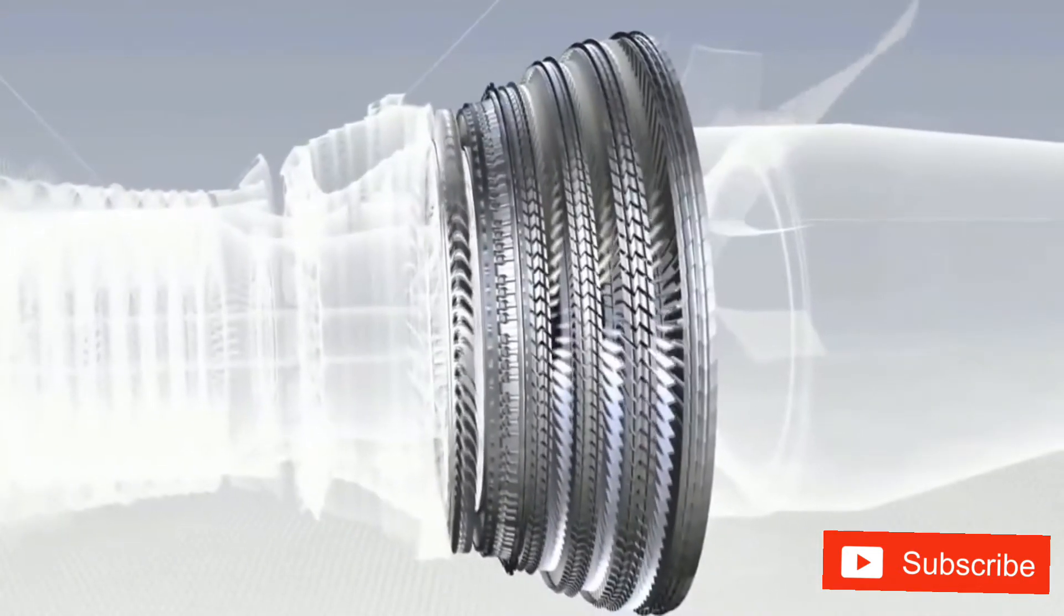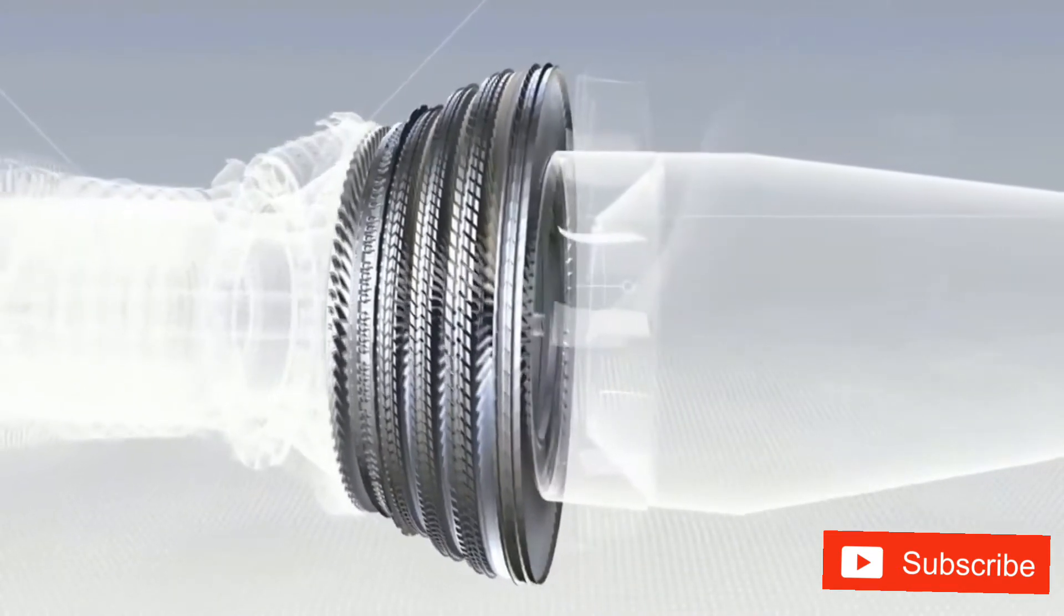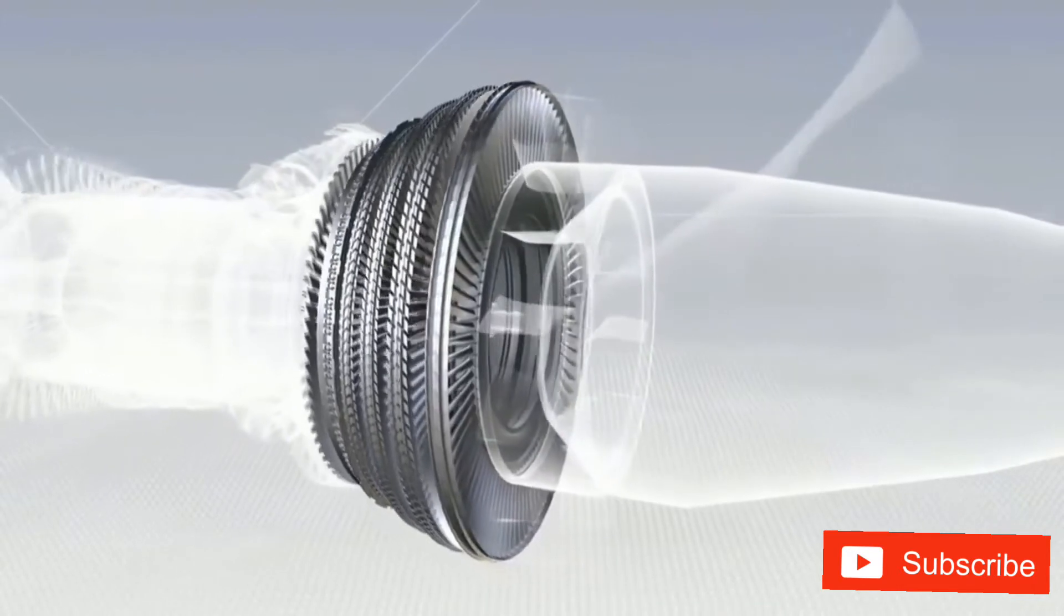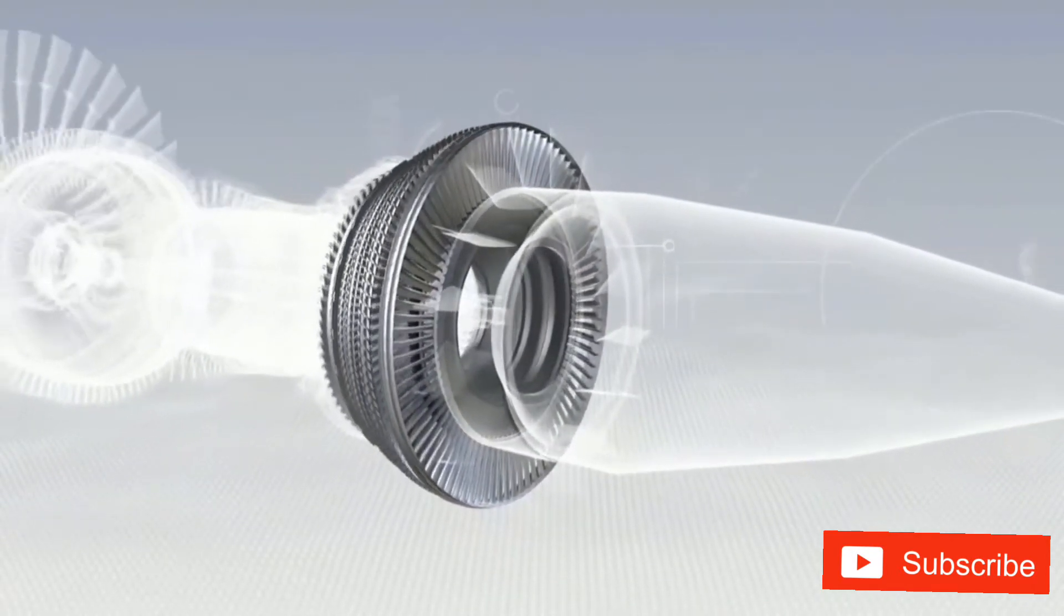The high and low pressure turbines, in which the pressure of the hot gas is reduced as they drive the compressors and fan. There are five turbine stages, one high pressure and four low pressure.